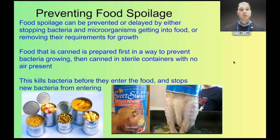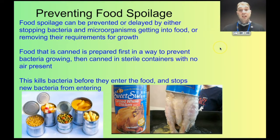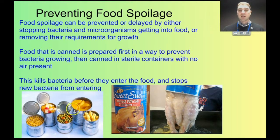So how do we prevent food spoilage? You want to prevent or delay the access of bacteria to the food, kill the bacteria before it can do too much, or reduce the ability of bacteria to grow by removing requirements for growth. The first method is canning — you prepare the food, place it in a sterile can, and then cook the food in the sealed can, which kills off the bacteria.